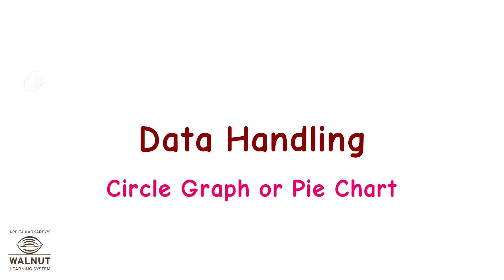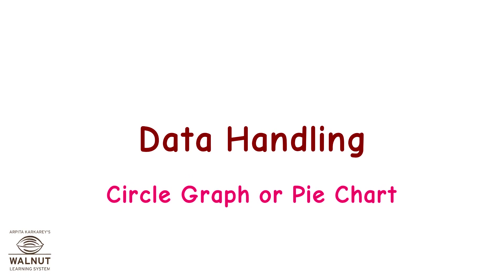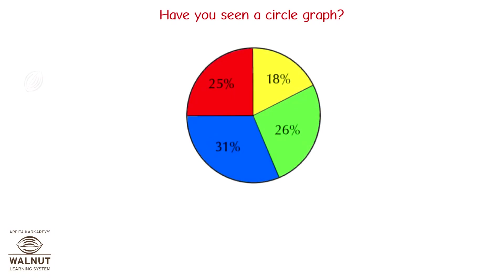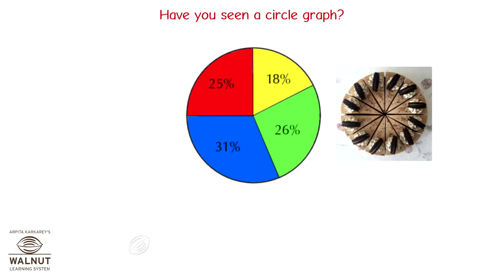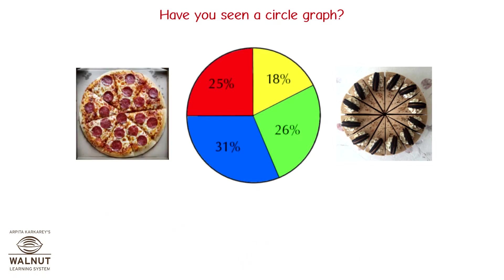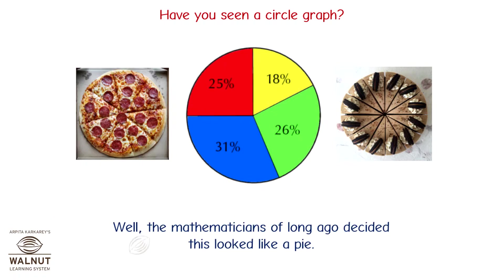Data Handling: Circle Graph or Pie Chart. Have you seen a circle graph? It looks like a round cake with slices made from the centre — more like the pizza you get in a box. The mathematicians of long ago decided this looked like a pie, which is a baked dish with a covering on top, usually made in a round tin. This graph is also called a pie chart.